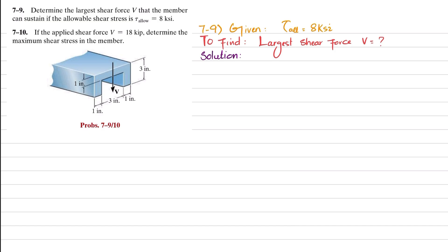Let's start with the solution. As we know, the allowable shearing stress can be written as τ = VQ_max / (I·t). Here we have the allowable stress, but we do not have Q_max, I, and t — and we are interested to find V. So we will first find the section property I.